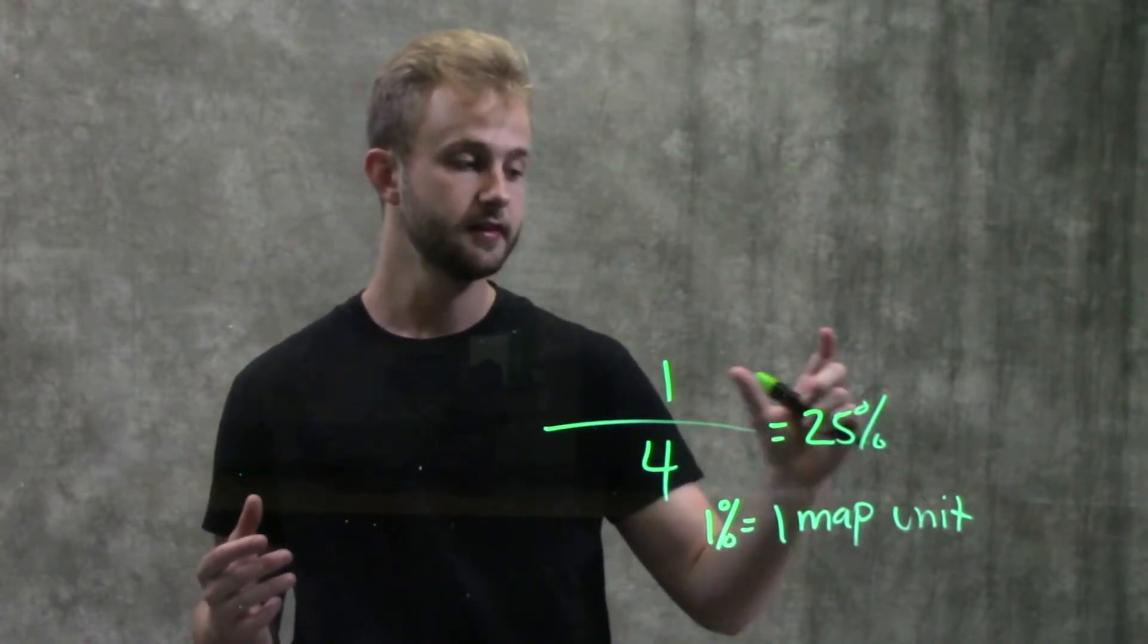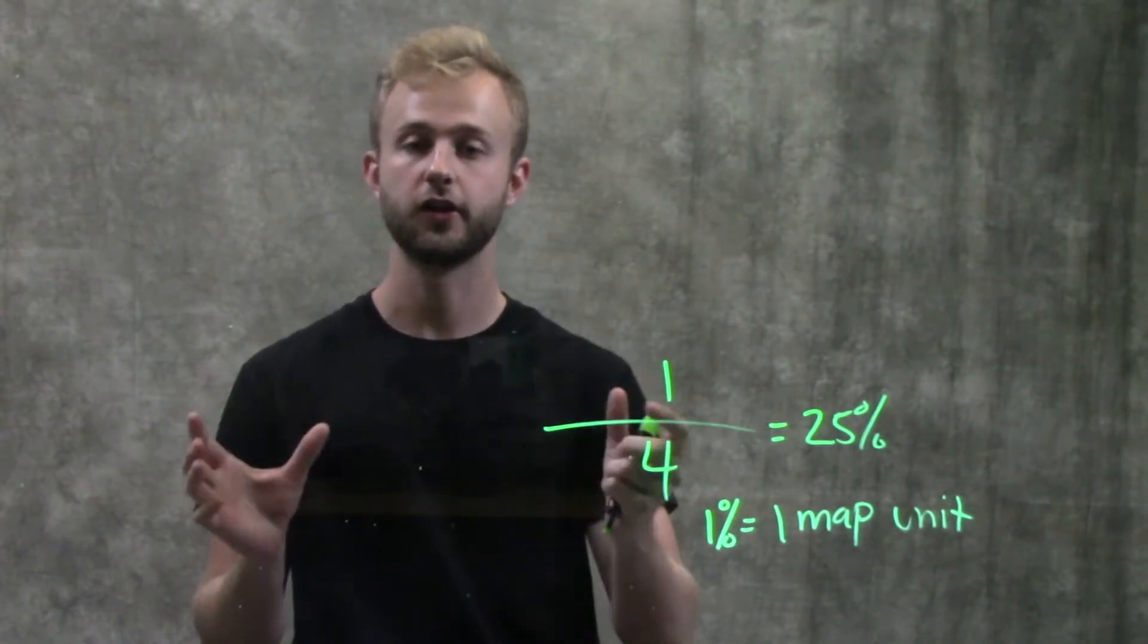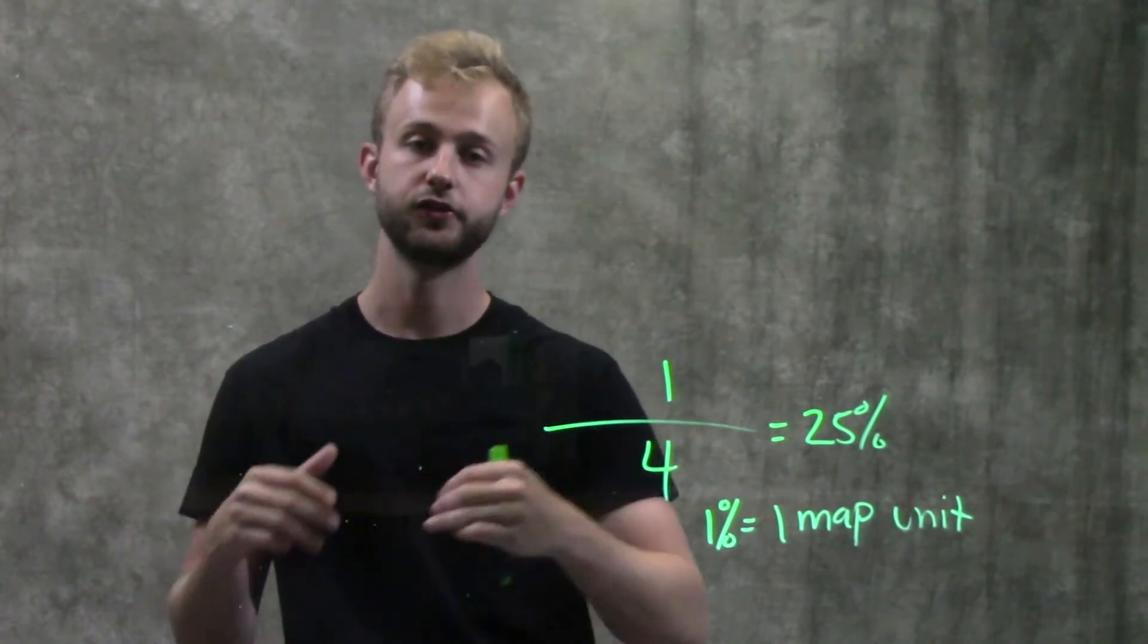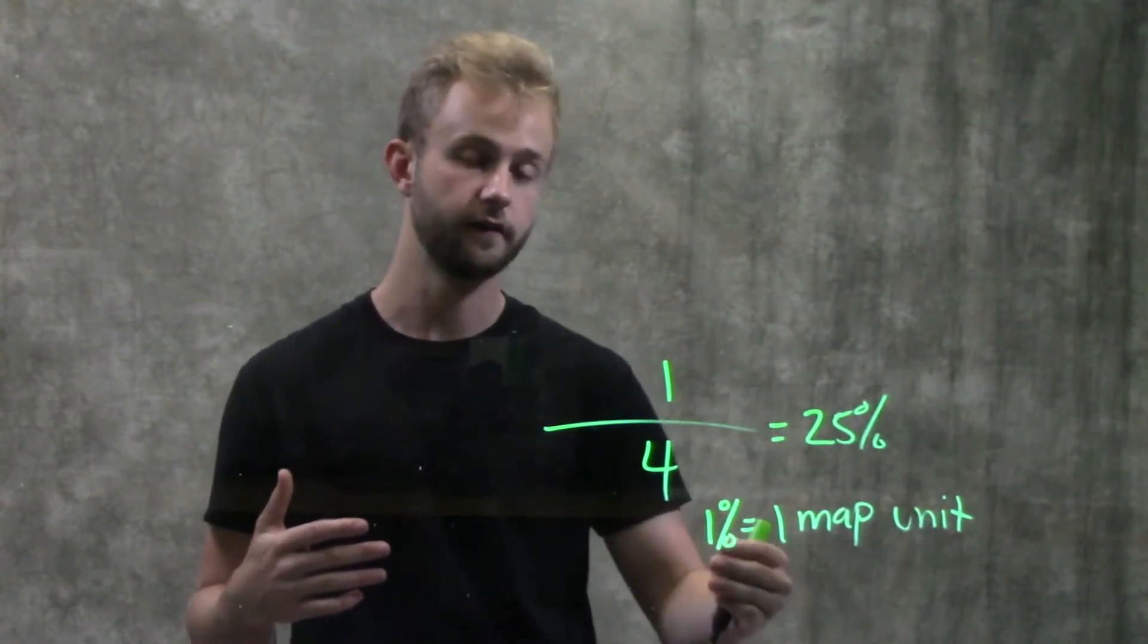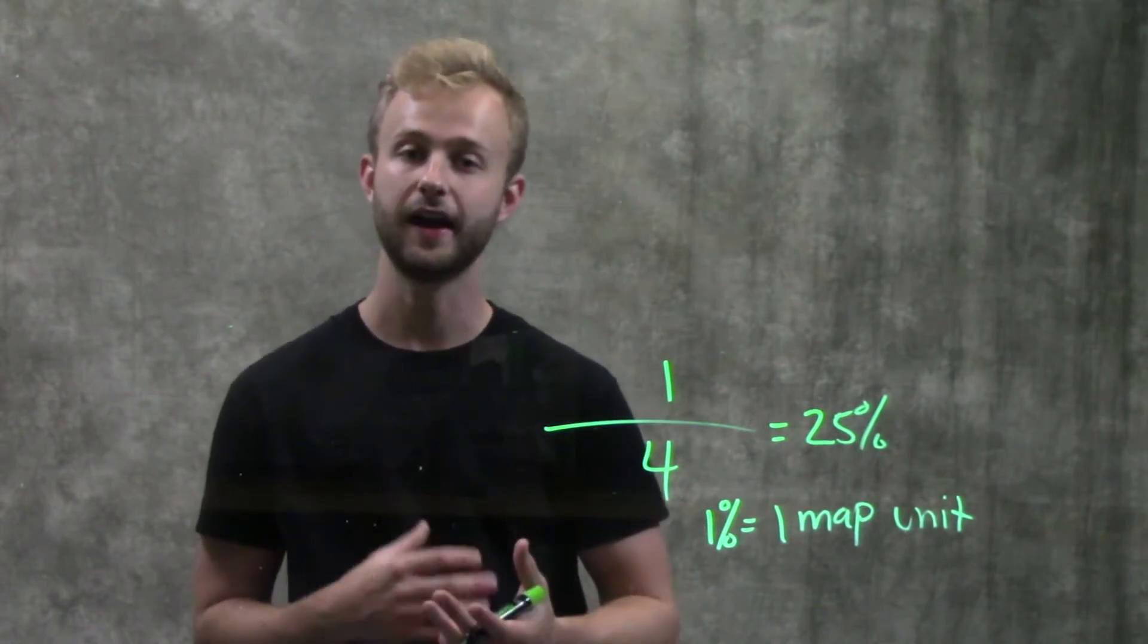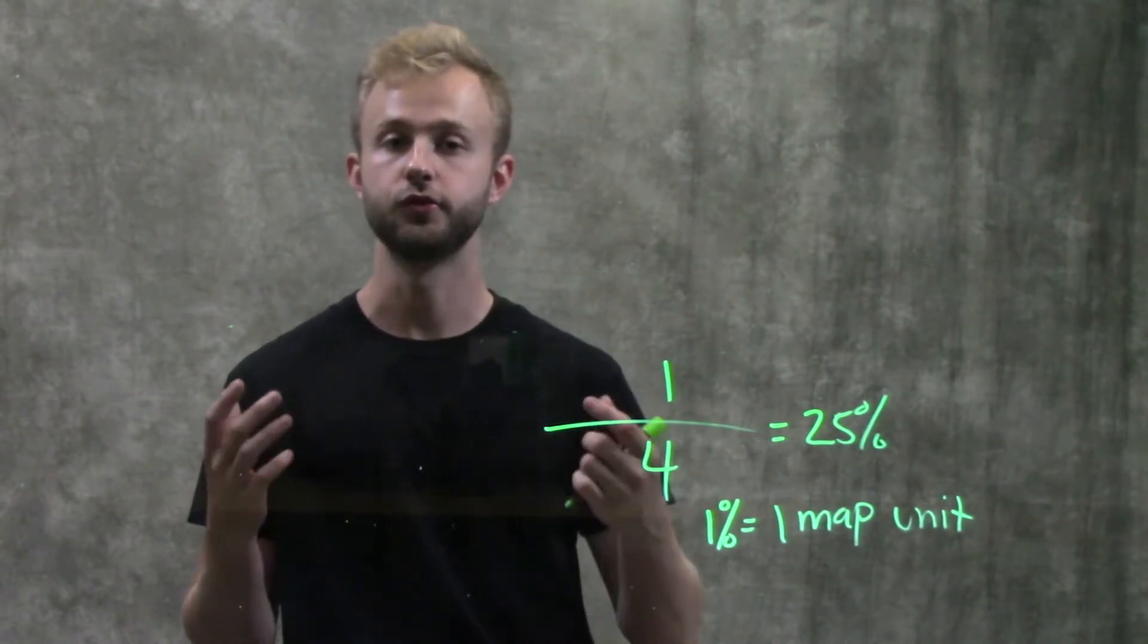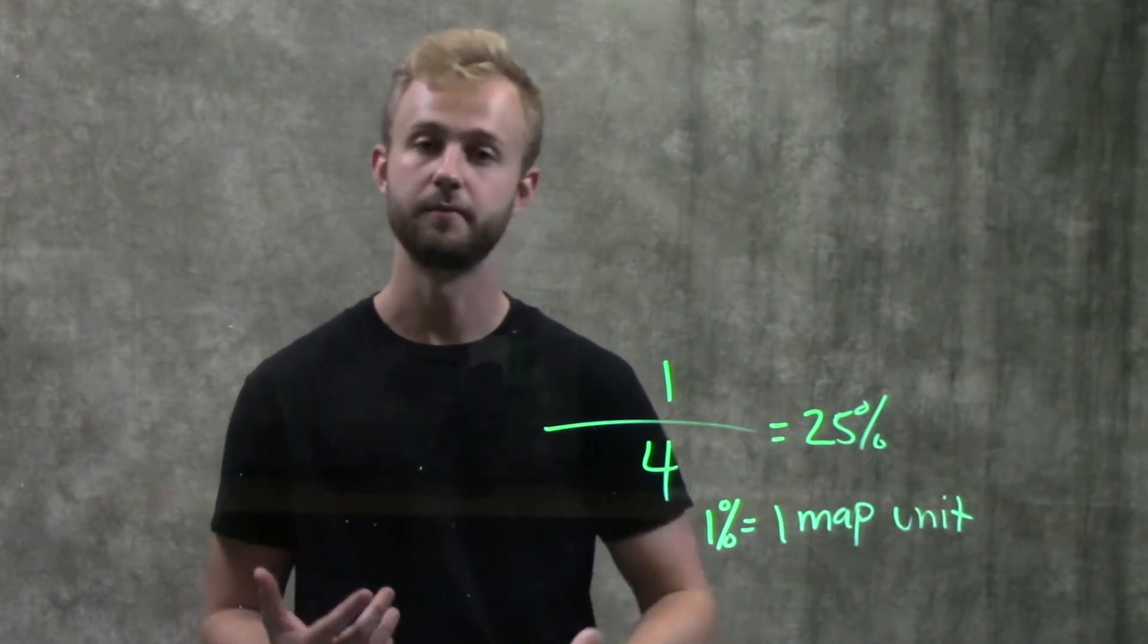Having these map units, you can have map units for several different genes and then plot them out and figure out where exactly those genes are on the chromosome and what order they're in, all based off of their recombination frequency. So linkage maps are a really useful tool to be able to figure out the order of genes on a chromosome from data about the offspring.